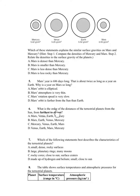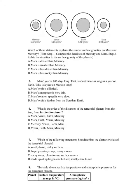Number 6. What is the order of the distances of the terrestrial planets from the Sun, from farthest to closest? A. Mars, Venus, Earth, Mercury. B. Mars, Earth, Venus, Mercury. C. Mercury, Venus, Earth, Mars. D. Venus, Earth, Mars, Mercury.